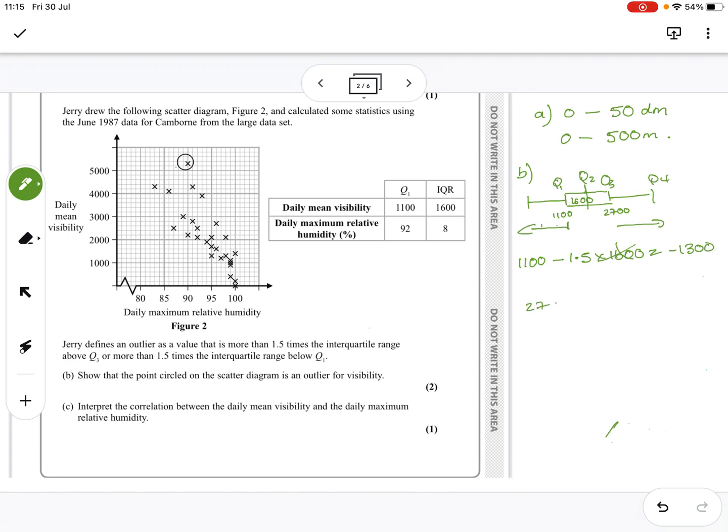If we go the other end, 2700 and we're going to add on 1.5 times the interquartile range. 2700 plus 1.5 times 1600, we get 5100.